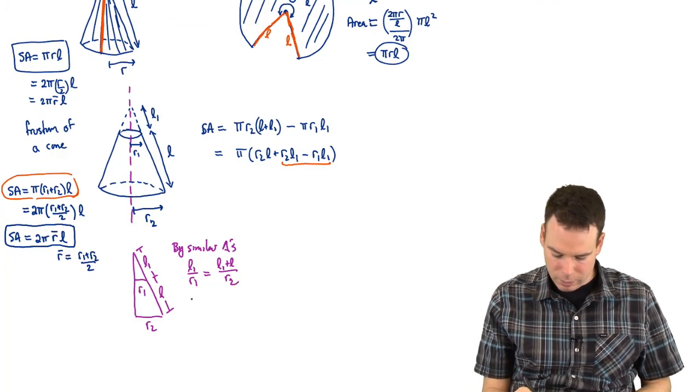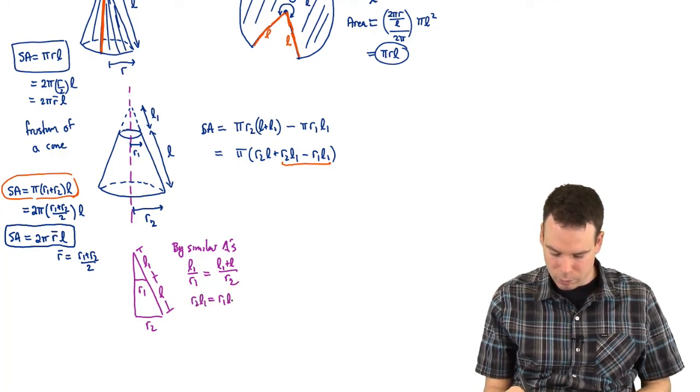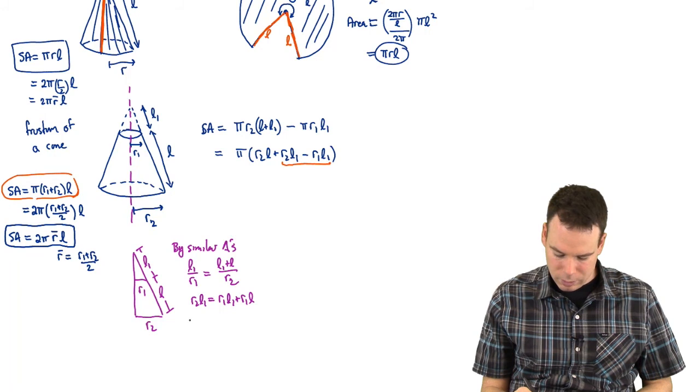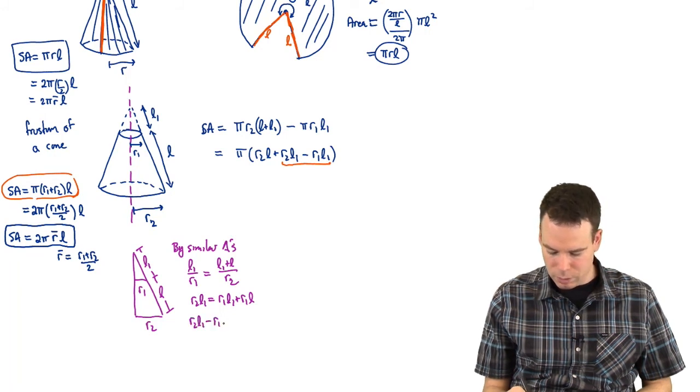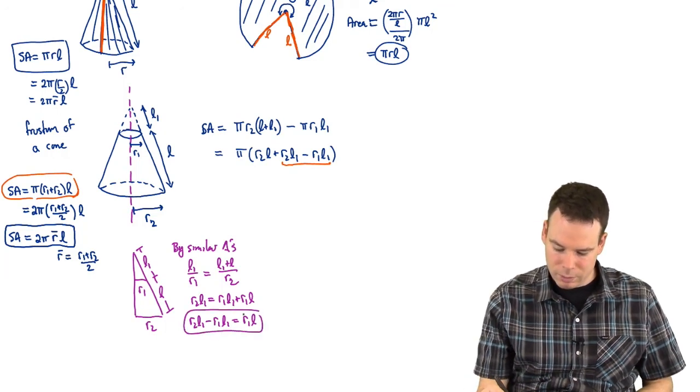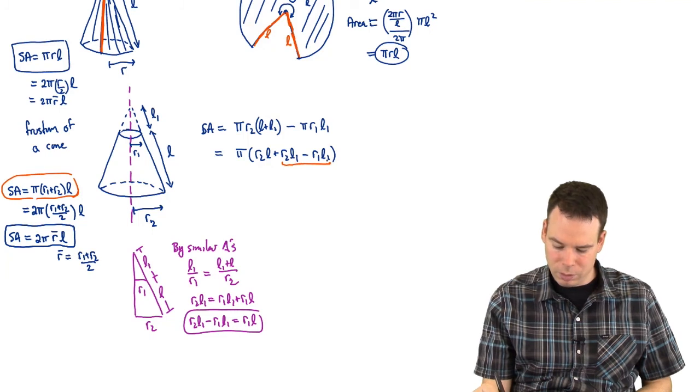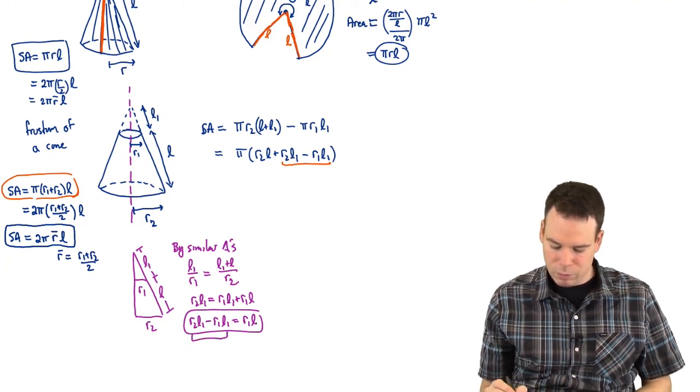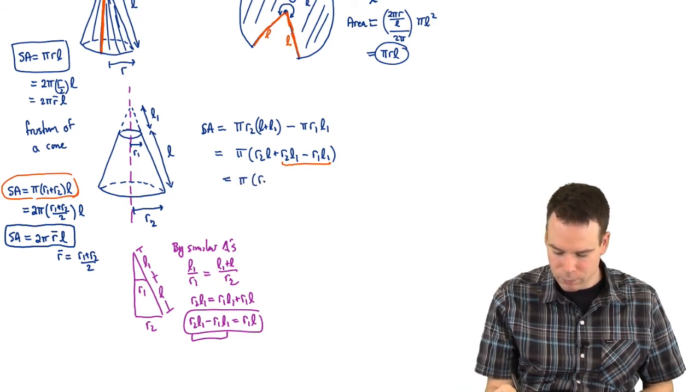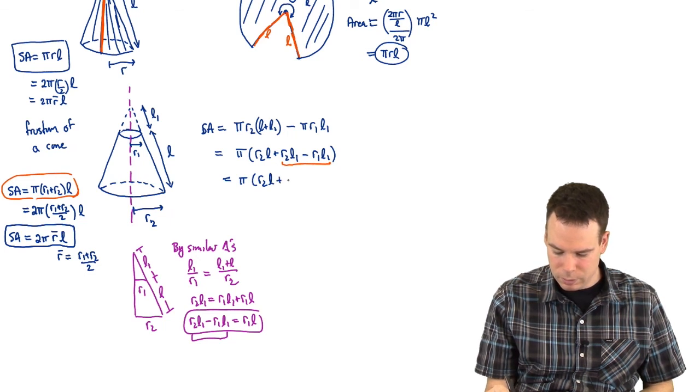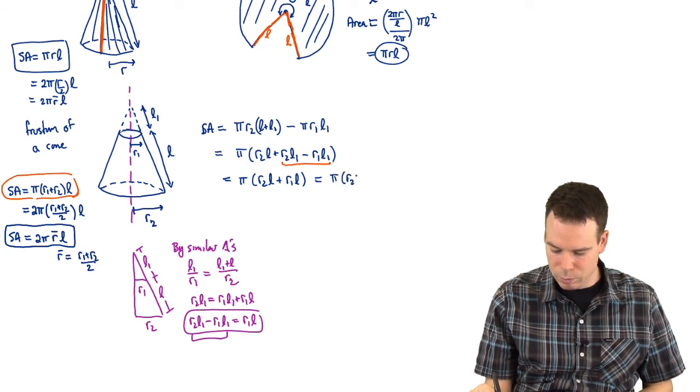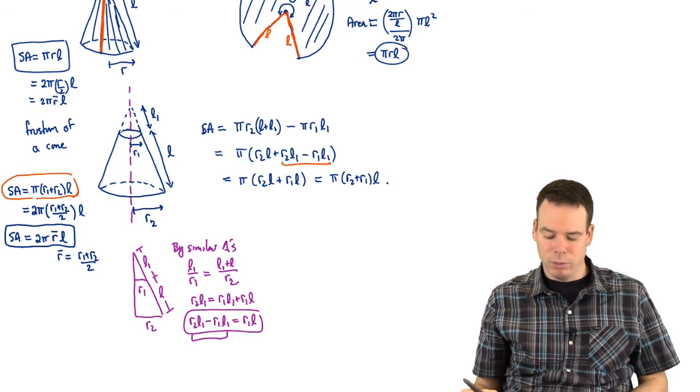And so now we get that R2L1 is equal to R1L1 + R1L. Putting everything involving L1 to one side of the equation, we get R2L1 - R1L1 is equal to R1L. And that's exactly what I need because it says R2L1 - R1L1, that's that thing there, can be replaced with R1L. So this can be written as R2L + R1L. Or in other words, π(R2 + R1)L. And that's exactly what I wanted to show.